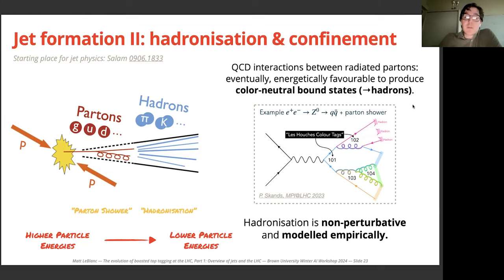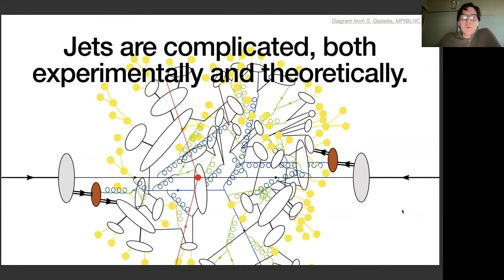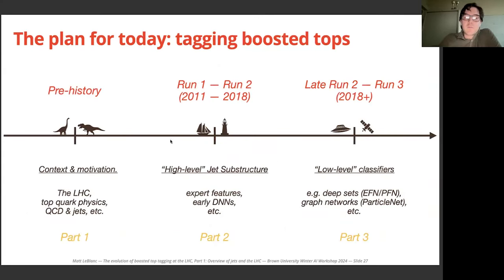At the end of the day, instead of seeing just the quark or gluon we see sets of many particles — tens of particles at the LHC — which hit our detector, bringing its own experimental complications. Jets are thus complicated both experimentally and theoretically, but this is one of the reasons they're a great place to apply machine learning. At this point the talk is handed over to Jennifer, who will discuss jet substructure and more about boosted tops.